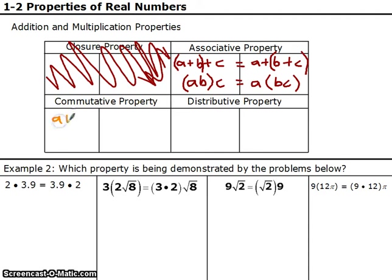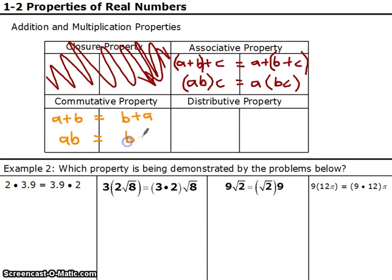The commutative property says if you have two numbers being added together, you're allowed to switch them and add them the other way — same result. It works for multiplication as well: A times B equals B times A. Note that we're only talking about addition and multiplication. These properties do not work with subtraction or division. You can change subtraction into addition by doing plus a negative, and division into multiplication by multiplying by the reciprocal, and then use these properties.